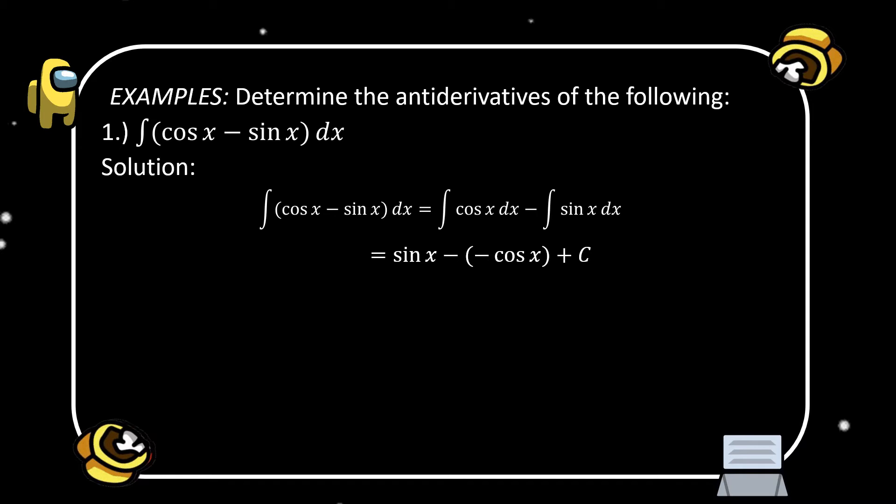When we simplify, that is sine x, and negative multiplied by negative cosine x gives positive cosine x. So therefore, the value of the integral of (cosine x minus sine x) dx is equal to sine x plus cosine x plus C.